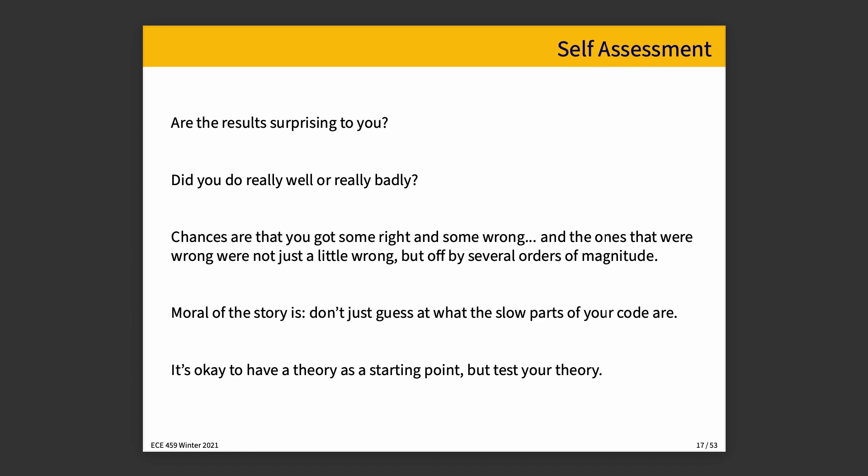So, a little self-assessment: are the results surprising to you? Did you do really well or really badly? Chances are you got some right and some wrong. But the ones that were wrong were probably wrong by a lot — not just a little. You probably clicked 10,000 but 100,000 was the answer, or you were off by several orders of magnitude. The moral of the story: you shouldn't guess at what the slow parts of your code are.